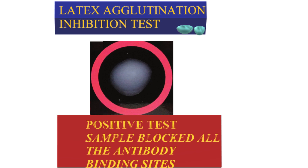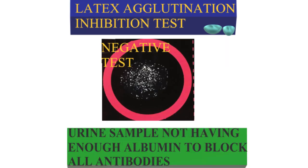Testing Methods — Semi-Quantitative Methods: Latex Agglutination Inhibition Test. One drop of urine is mixed with one drop of goat anti-human albumin. The titer is adjusted so that all antibody binding sites are occupied at a urinary concentration of 30 mg per litre or greater. Excess albumin binding sites are detected by the addition of one drop of albumin-coated latex microspheres and subsequent rocking for 2 minutes. Albumin concentration less than 20 mg per litre produces agglutination.